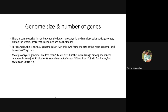We now come to the last concept of prokaryotic genome: genome size and number of genes. There is some overlap in size between the largest prokaryotic and smallest eukaryotic genomes, but prokaryotic genomes are much smaller in size than eukaryotic genomes. E. coli K12, for example, is 4.64 Mbps — two-fifths the size of the yeast genome — and has around 4,315 genes. Most prokaryotic genomes are less than 5 Mbps in size.